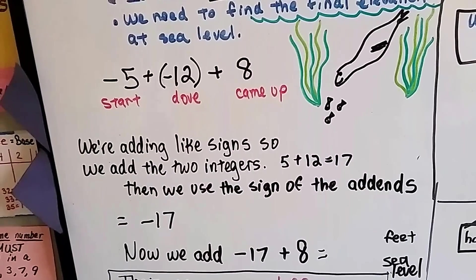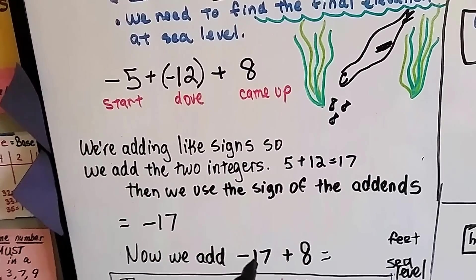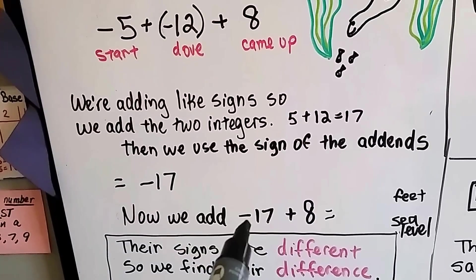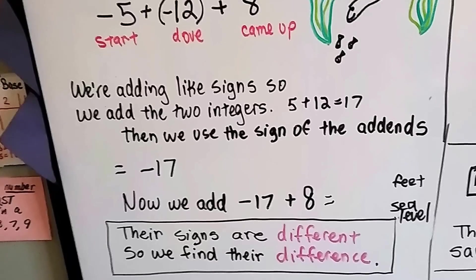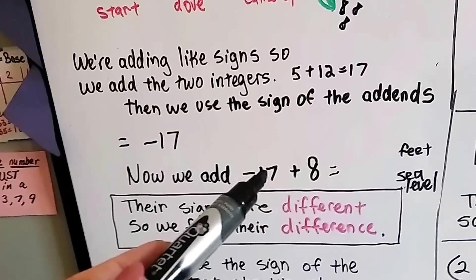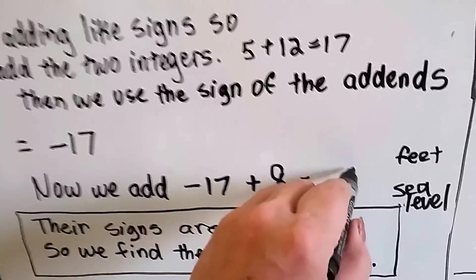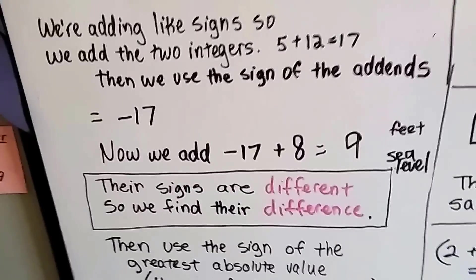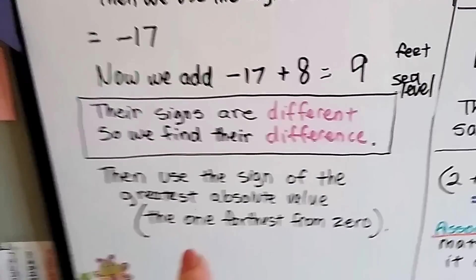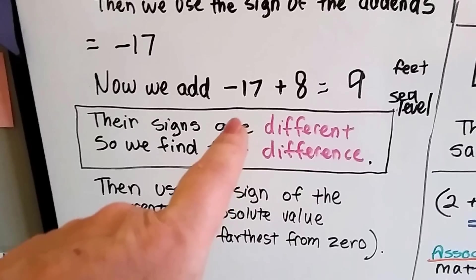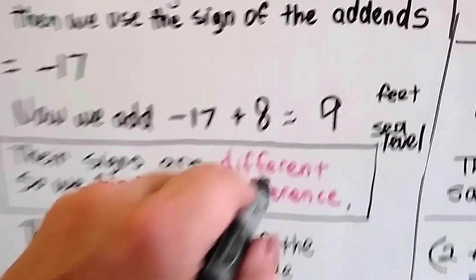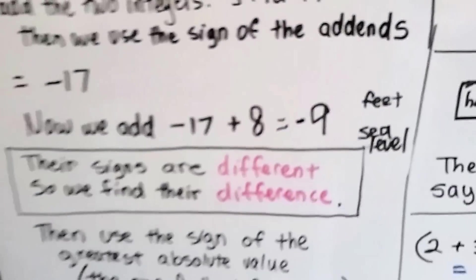Now this 8 is still waiting for us to do something with it. So we've got negative 17 plus 8. Now, they have different signs, a negative 17 and a positive 8. When their signs are different, we find their difference. The difference between 17 and 8 is 9. But is it a positive 9 or a negative 9? We use the sign of the greatest absolute value, the one farthest from 0. And who is farther from 0, 17 or 8? The 17 is. So, that means it's a negative 9.